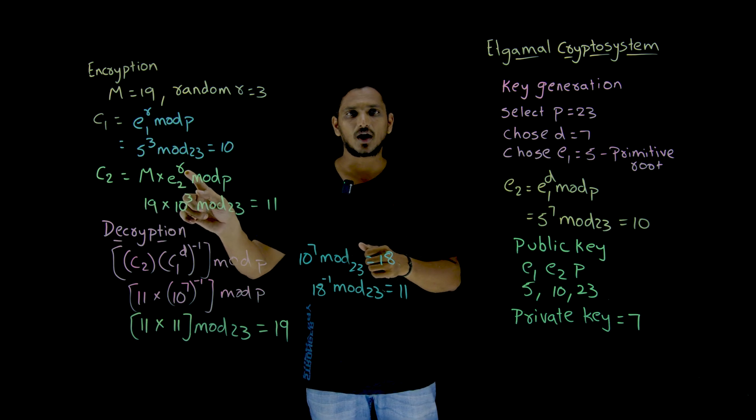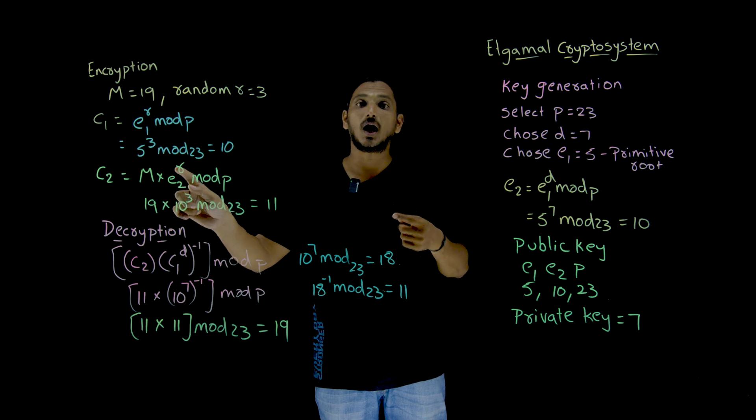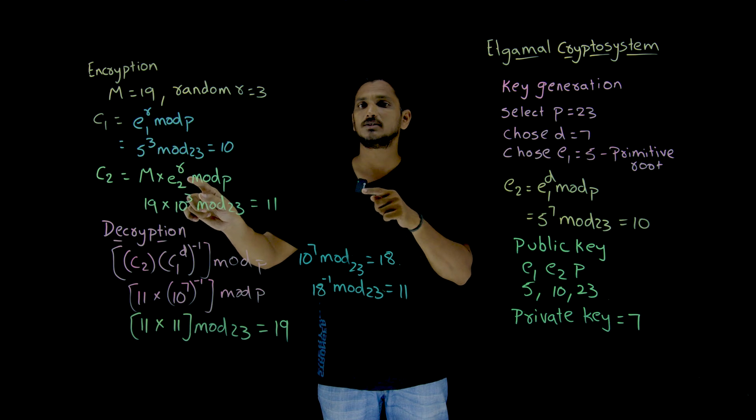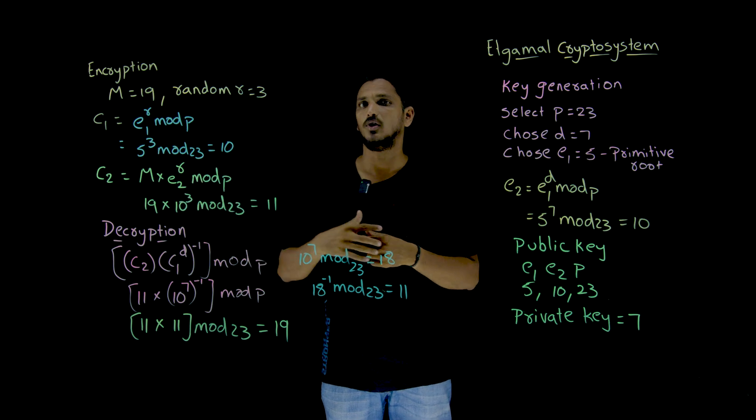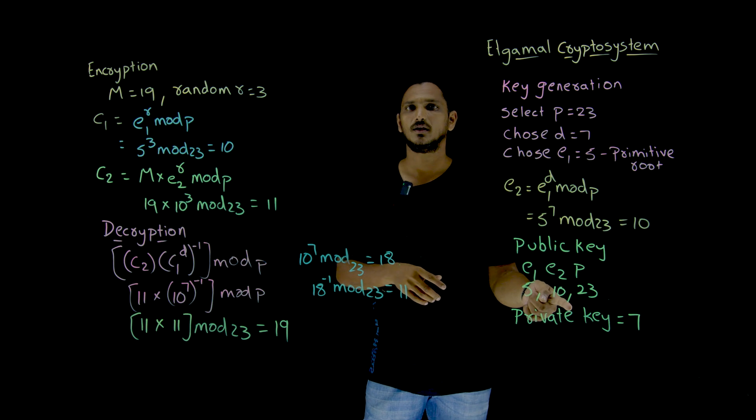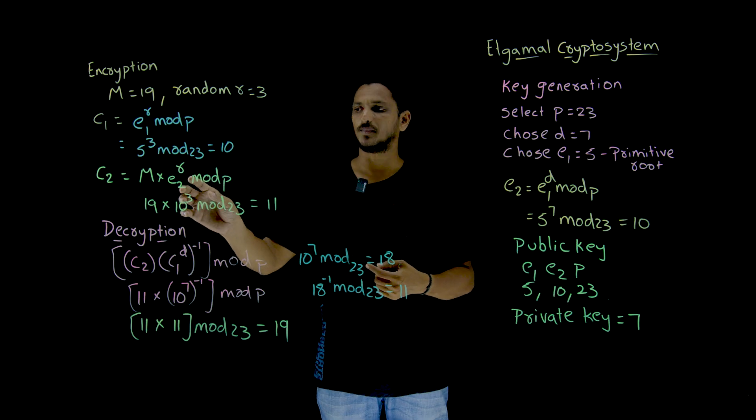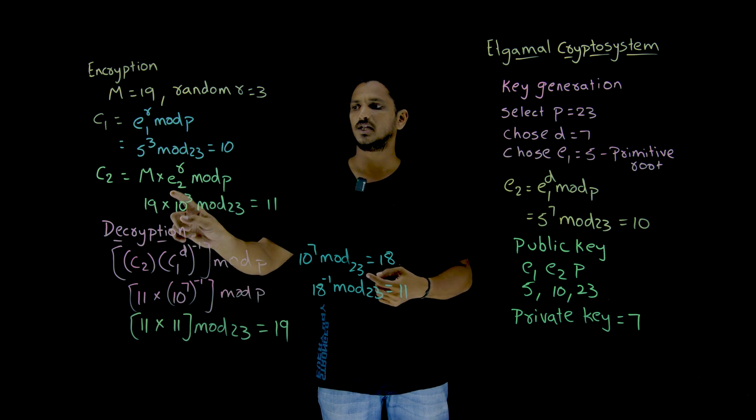So E2 power R means indirectly what we are using here. E1 power R D is used here. Means here it is using R value, here it is using D value also. D means private key. That is why, this is what happened. So 10 power 3, which is 11 value.